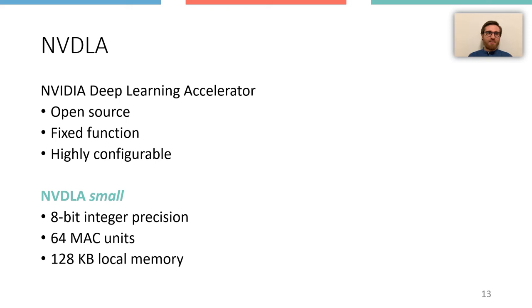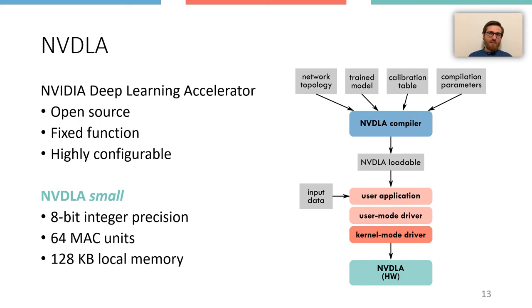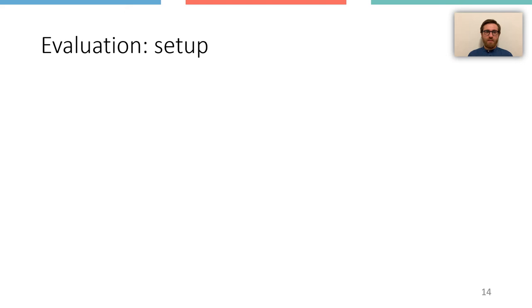The NVDLA compiler takes as inputs the network topology in ProtoTXT format, a trained Caffe model, and a calibration table, which is needed for adjusting the network model that was trained in full precision to work with reduced precision. The NVDLA compiler produces an NVDLA loadable containing all the information layer by layer to configure and invoke NVDLA. The NVDLA runtime leverages the user mode driver to load the inputs, load the NVDLA loadable, and to submit inference jobs to the kernel mode driver, that is a Linux device driver.